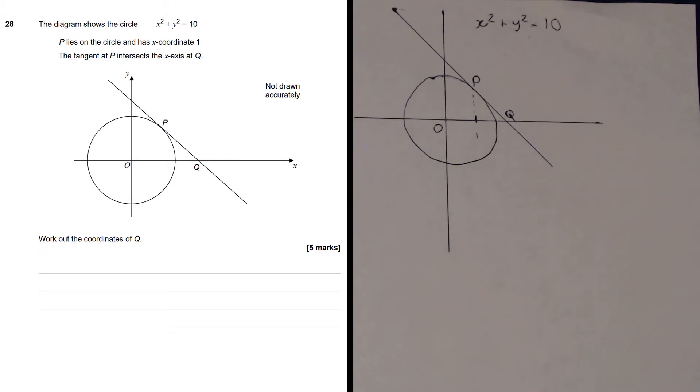We are told that the point P lies on the circle and has x-coordinate 1, so I've marked in the x-coordinate 1 there. We are given that the tangent at P intersects the x-axis at Q, and we need to find the coordinates of Q. How can we do that?